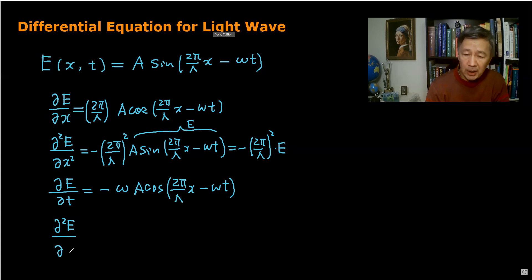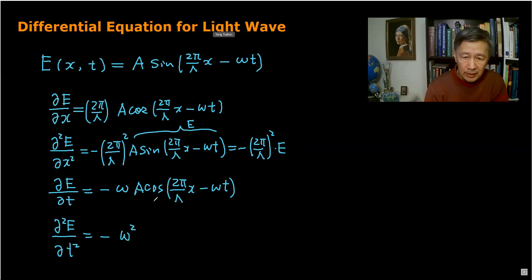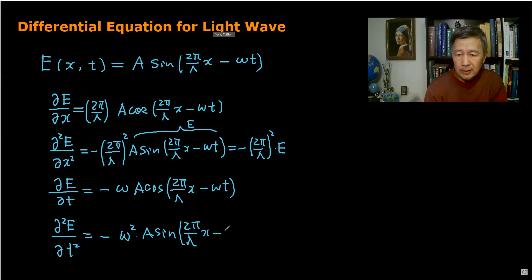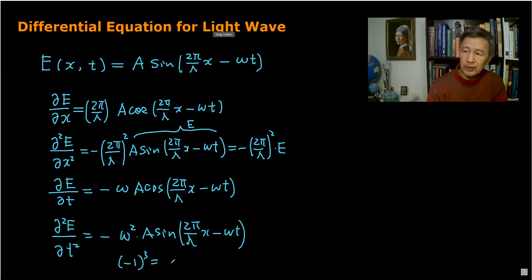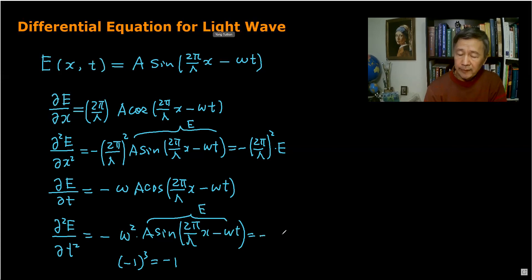The second partial derivative with respect to time: we pick up another factor of omega, so omega squared in total. After differentiating cosine we get a sine term, and with the three negative signs combined we still have a net negative sign. Since the sine term is again E, the second partial derivative with respect to time equals negative omega squared multiplied by E.